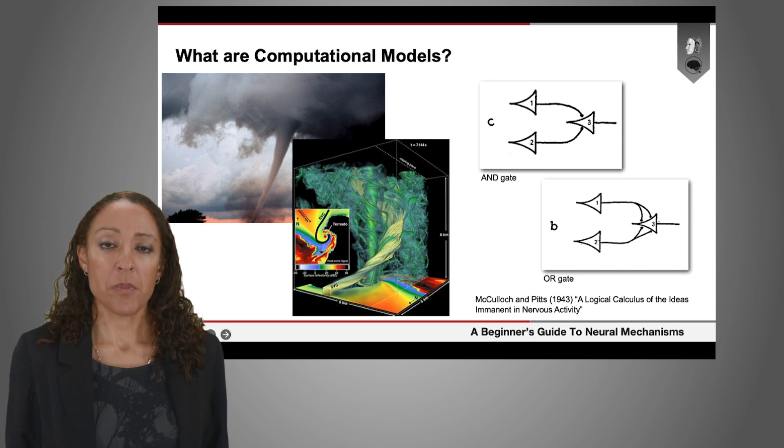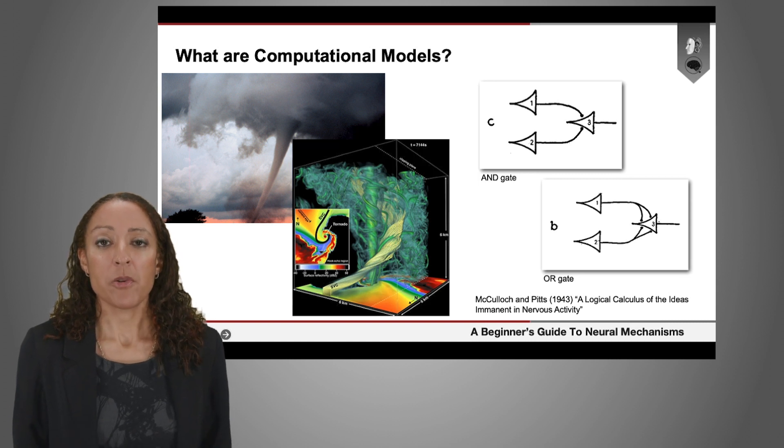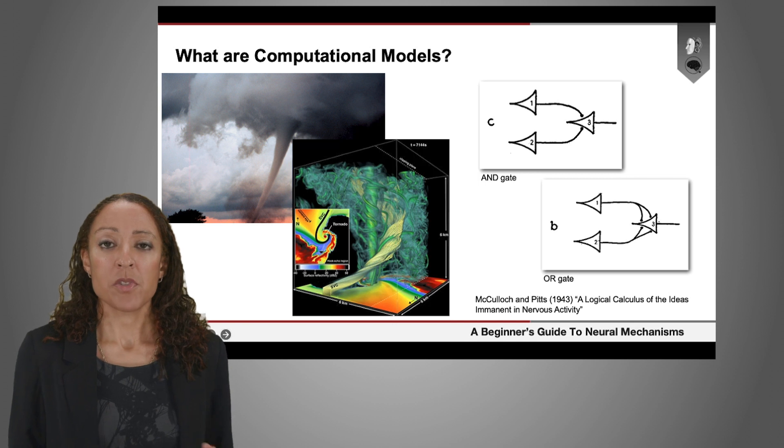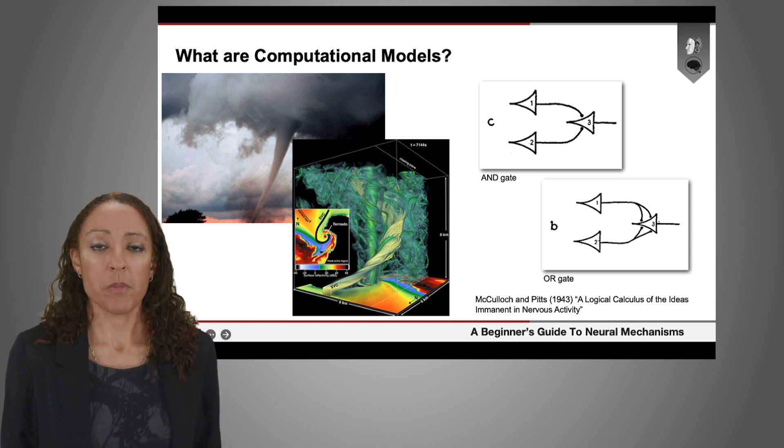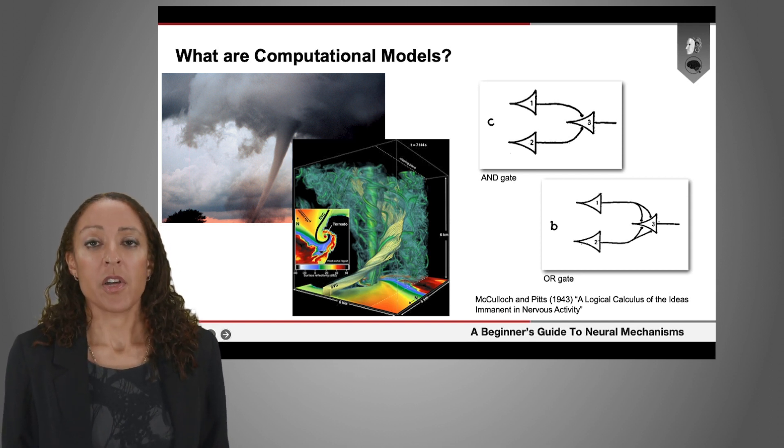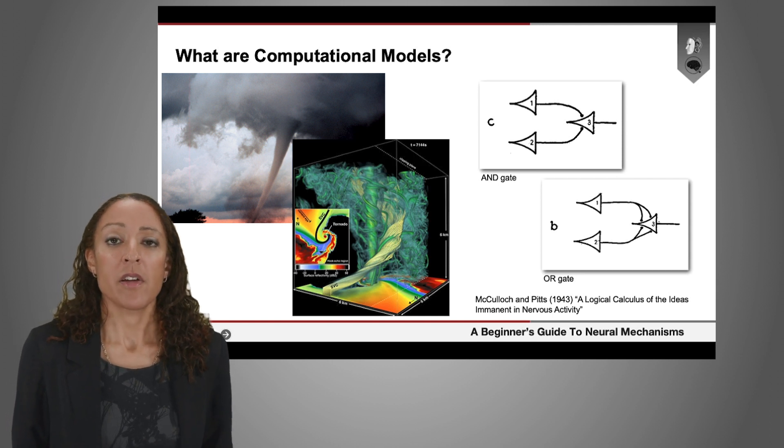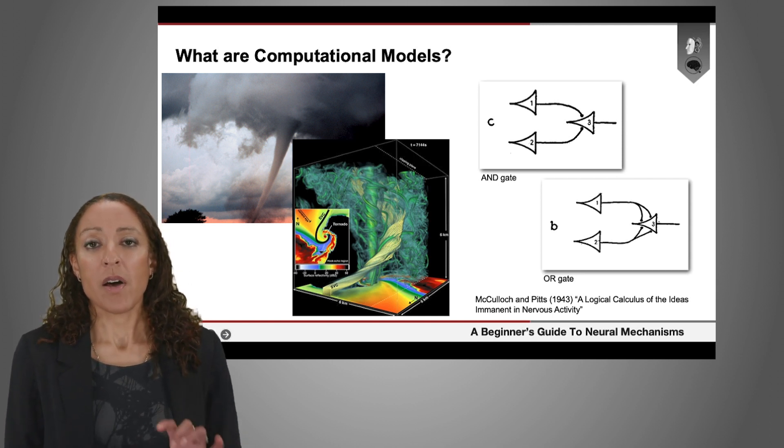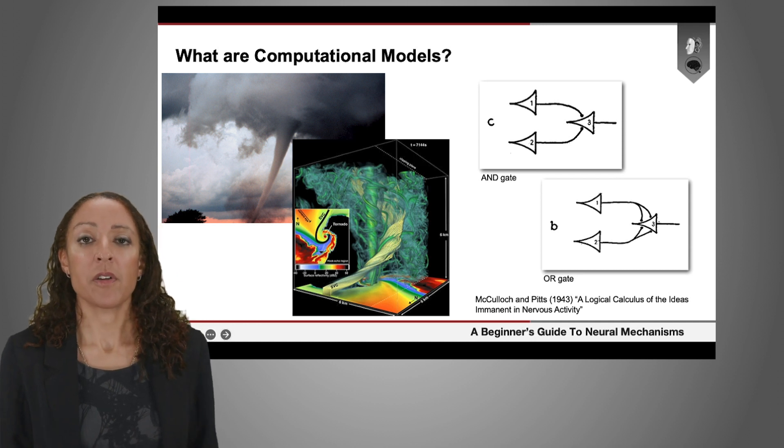This way of thinking about computational models goes back quite far in the history of neuroscience. So here you have some diagrams on the right from McCulloch and Pitts from their seminal work on neural networks in the brain. So in the early days of neurophysiology, already people had the idea that if you think about how neurons signal to one another,